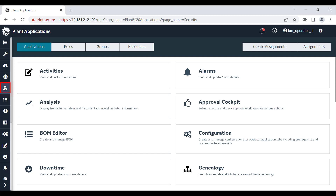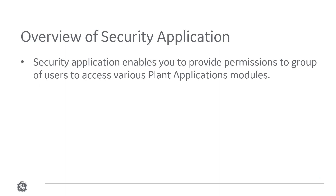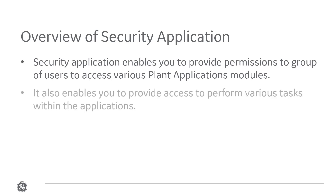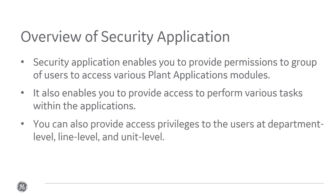Tasks such as creating work orders, executing work orders, and so on are secured and hence require permissions. You must enable these permissions from the security application. It enables you to provide permissions to a group of users to access various plant application modules, perform various tasks within the applications, and access privileges at department level, line level, and unit level.